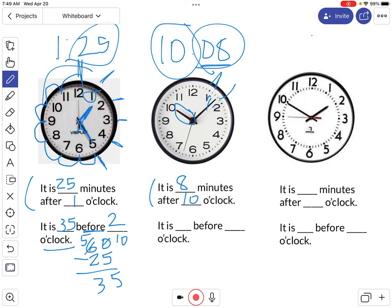It is how many minutes before the next hour? Well, if 8 minutes have been used up and there's 60 minutes in the hour, 60 minus 8, you can do the regrouping, but it's 52. So it is 52 minutes before, excuse me, 11 o'clock. Because it's 10 o'clock right now, so we're moving up to 11 o'clock. It's 52 before 11.